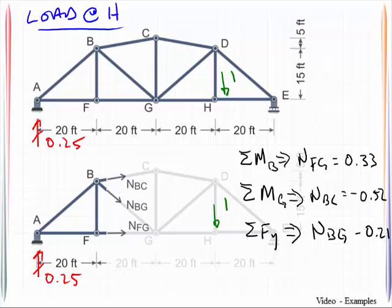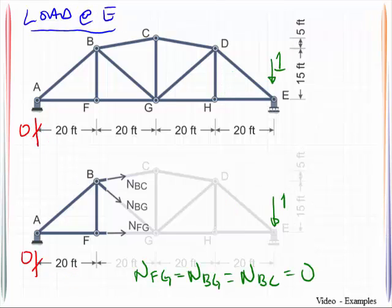So we can move the load over to point H. Run through the exact same sequence. Once again, not being disturbed if that unit load doesn't show up on the free body diagram. We simply won't reinvent the statics. And then lastly, at point E.